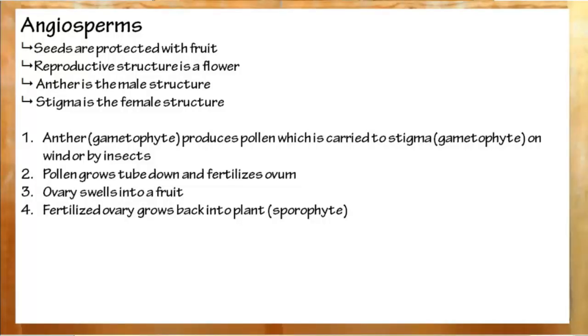Last up, angiosperms. These are flowers. These have male structures, anthers, and female structures, stigma. Pollen will be carried away from the anthers by insects or the wind or some other device, and eventually reach a stigma. Pollen will be implanted in, grow a tube down, fertilize the egg, and then the ovary will swell into a fruit protecting the seeds that have just been fertilized.